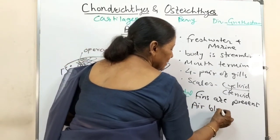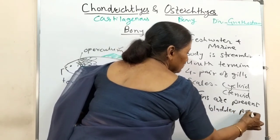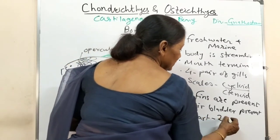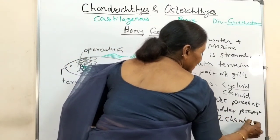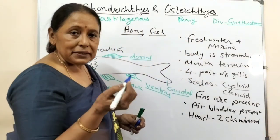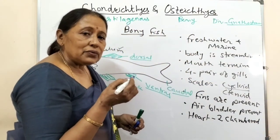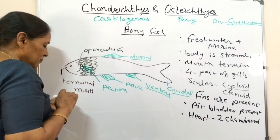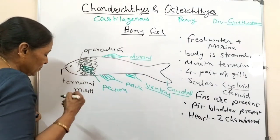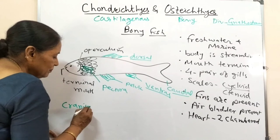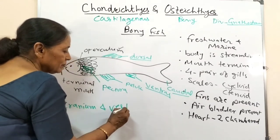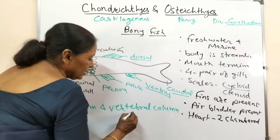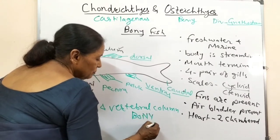The heart is two-chambered - one auricle and one ventricle - and it is a venous heart, of course. As vertebrates, they have a vertebral column. The notochord is now replaced. The cranium and vertebral column are bony - that is why they are called bony fishes.